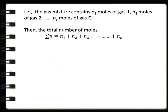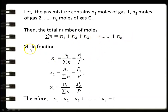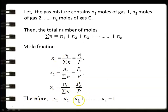The gas mixture contains N1 moles of gas A1, N2 moles of gas A2, and Nc moles of gas Ac. Total number of moles N = N1 + N2 + N3 + ... + Nc. The mole fraction X1 = N1 / ΣN = P1 / P; X2 = N2 / ΣN = P2 / P; Xc = Nc / ΣN = Pc / P. Therefore, X1 + X2 + X3 + ... + Xc = 1. The sum of the mole fractions equals 1 for the gaseous mixture.